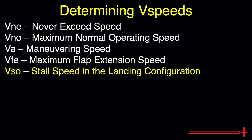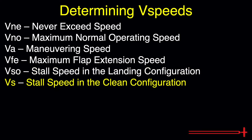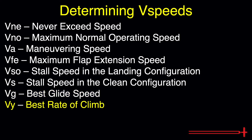We will also identify VSO, stall speed in the landing configuration; VS, stall speed in the clean configuration; VG, best glide speed or the speed resulting in the greatest horizontal distance per unit of altitude lost; VY, best rate of climb or the speed resulting in the greatest gain in altitude per unit time; and VX, best angle of climb or the speed resulting in the greatest gain in altitude per distance traveled horizontally.